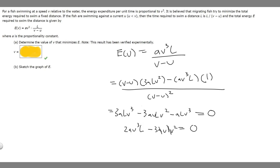We're just going to be left with 2v³ minus 3uv². So we set this equal to zero.